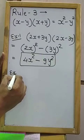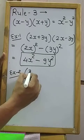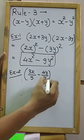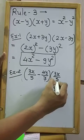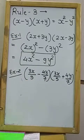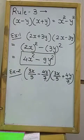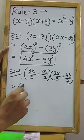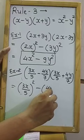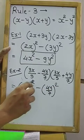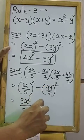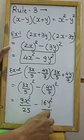Now example number two. Both brackets are equal — one has minus and one has plus, same rule applies. Square of first term minus square of second term: 3² = 9x², minus 5² = 25, minus 4² = 16y², minus 7² = 49.